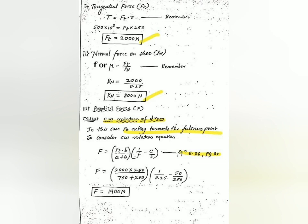Step 3: Find the applied force F. For the first case — clockwise rotation of the brake drum — the tangential force Ft acts towards the fulcrum point. Using equation 6.86 from the data book, page 88, and substituting all values into that expression, we get F equal to 1900 N.